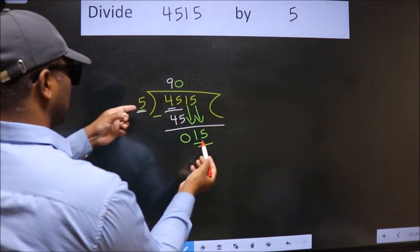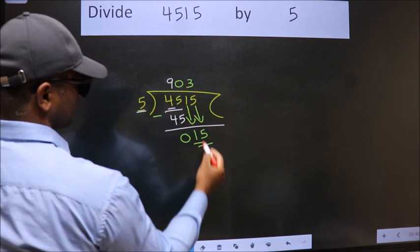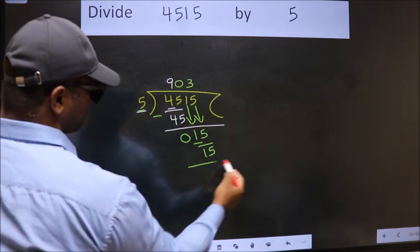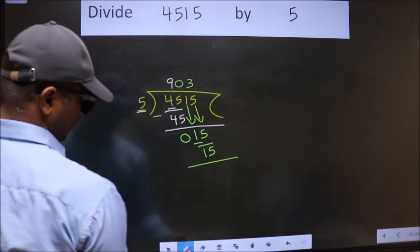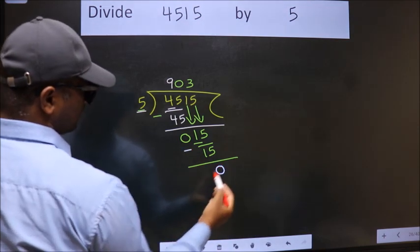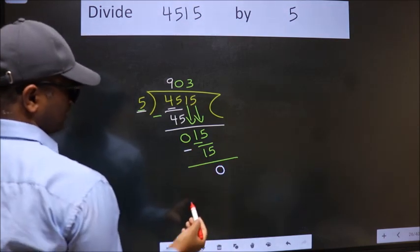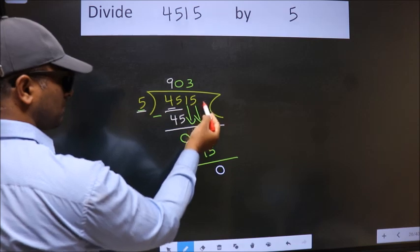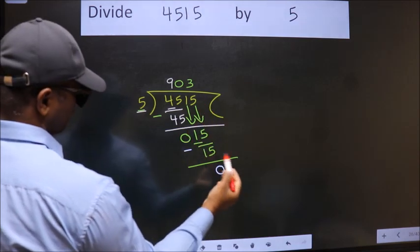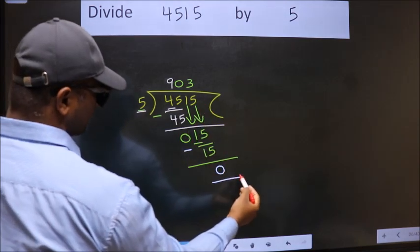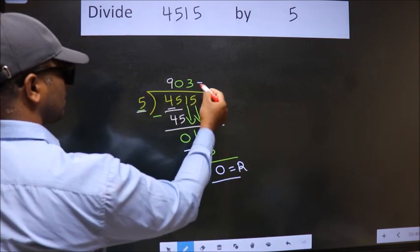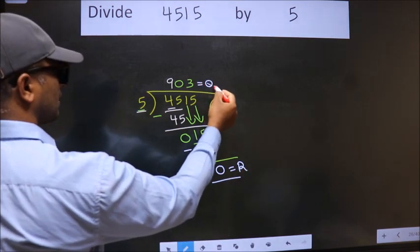When do we get 15 in the 5 times table? 5 times 3 is 15. Now we subtract and we get 0. There are no more numbers to bring down, so we stop here. This is our remainder and this is our quotient.